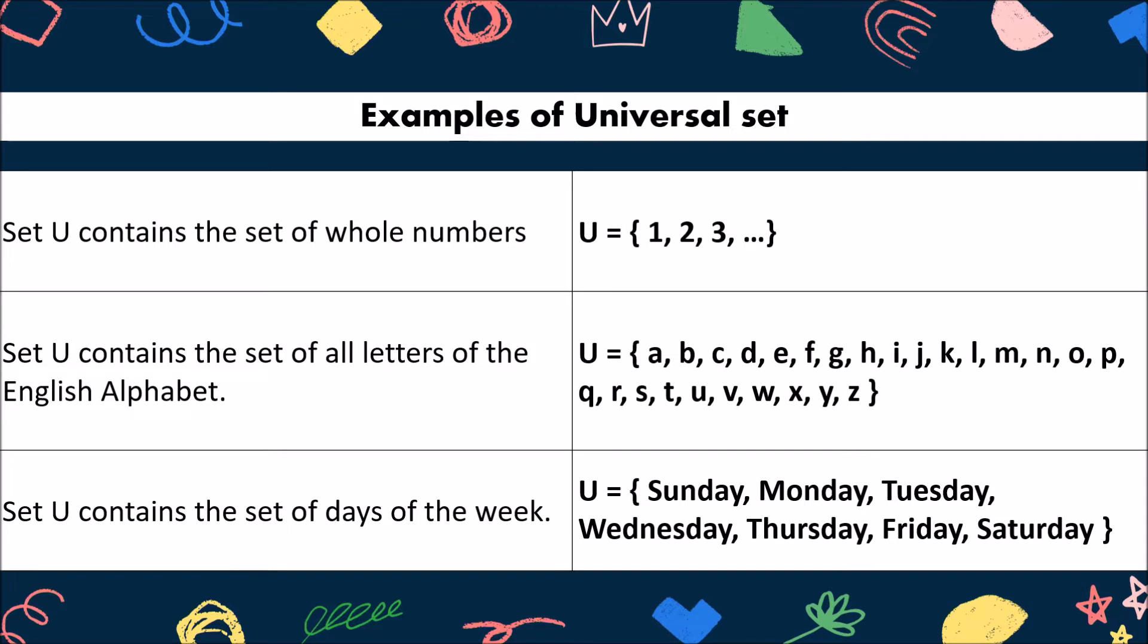Second example, universal set U contains the set of all letters of the English alphabet. Thus, set U contains elements from letter A to Z. Lastly, universal set U contains the set of days of the week. So, set U is equal to the elements Sunday, Monday, Tuesday, up to Saturday.